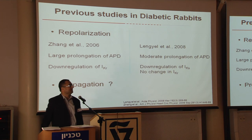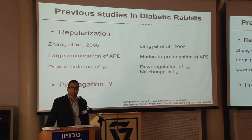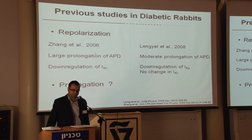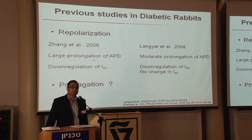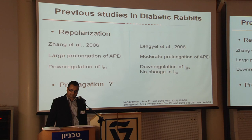Other groups have investigated altered cardiac electrophysiology in rabbits and dogs, and a couple of groups have done extensive studies in these species. A group at the Montreal Heart Institute found that action potential duration was quite prolonged in diabetic rabbits and attributed it to down-regulation of the rapid delayed rectifier potassium current IKR. In contrast, Professor Andras Varro's group in Hungary found little or no prolongation of APD in diabetic rabbits, no down-regulation of IKR, but found that IKS was down-regulated. Neither group studied whether cardiac propagation was altered.